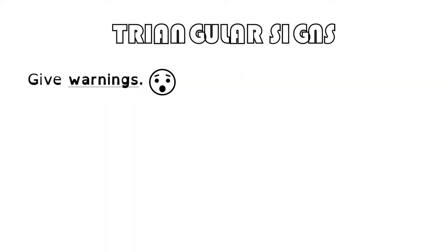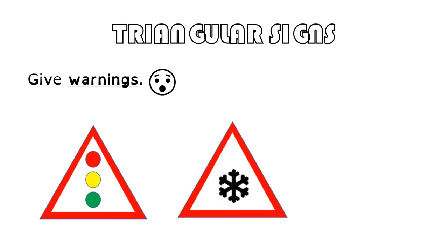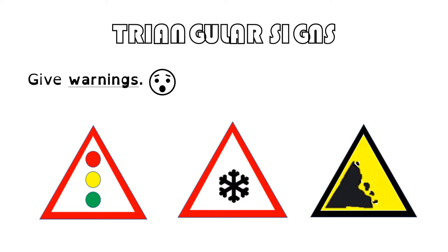Let's have a look at the triangular signs. They give warnings, so you need to be careful if you see a triangular sign. For example, there's a traffic light, you can find ice or snow on the road, or there are some rocks falling. Be careful!